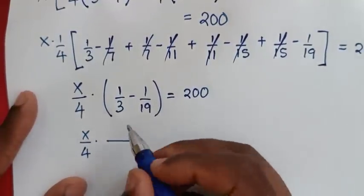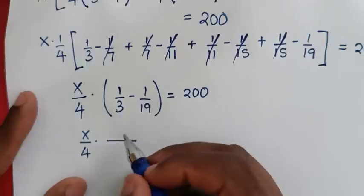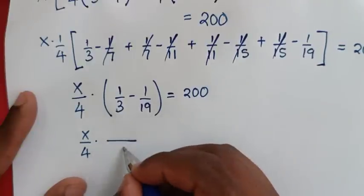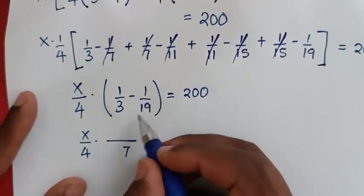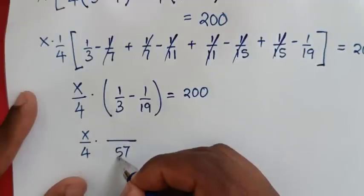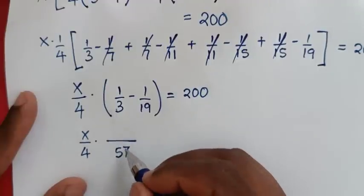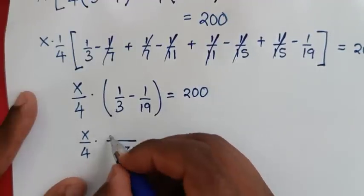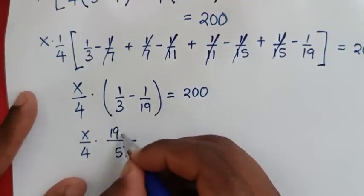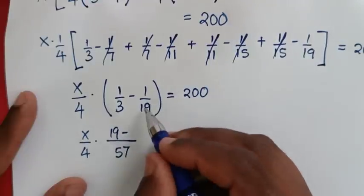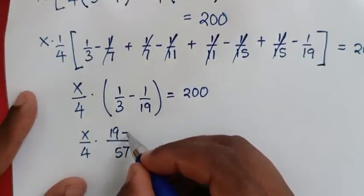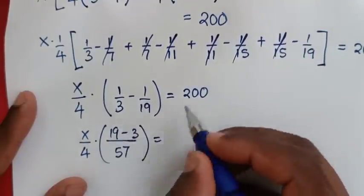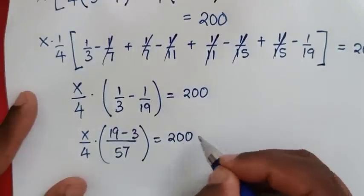Next, x over 4 times (1/3 minus 1/19): the common denominator is 3 times 19 equals 57. So 1/3 minus 1/19 equals 19/57 minus 3/57 equals 16/57. We now have x over 4 times 16 over 57 equals 200.